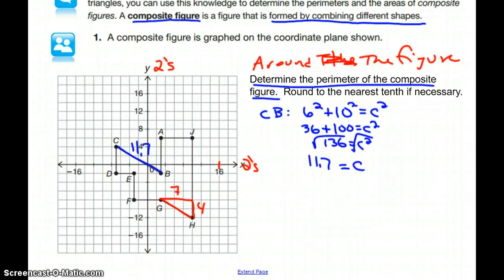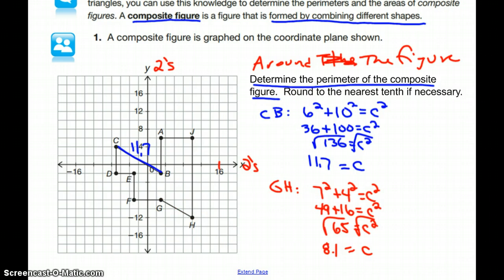Using the Pythagorean theorem for GH, I would have 7 squared plus 4 squared equals C squared. So we have 49 plus 16, which turns out to be 65. And then the square root of 65 is 8.06. So rounding to the nearest tenth, I have a length of 8.1 for GH.